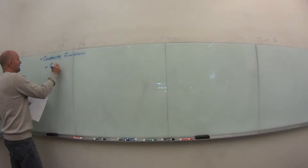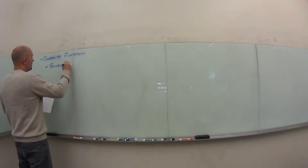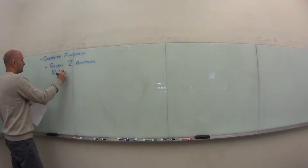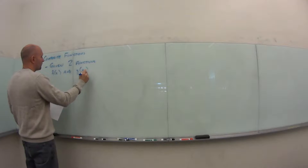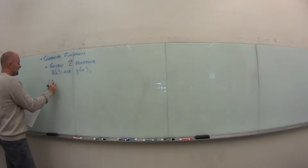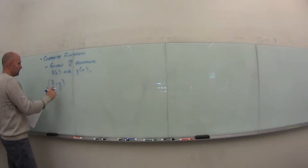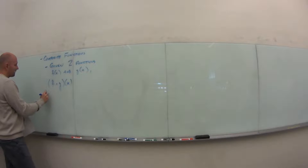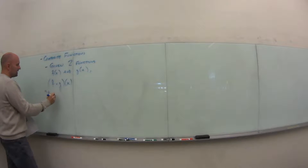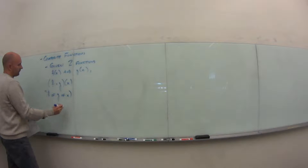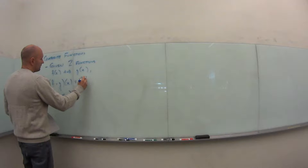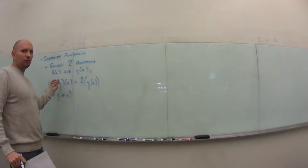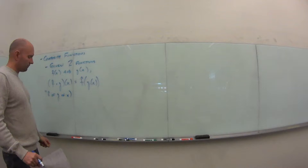Given two functions f(x) and g(x), the notation f∘g of x — we say this as 'f of g of x.' What this means is we take the g function and plug it into f, whatever that function might be.